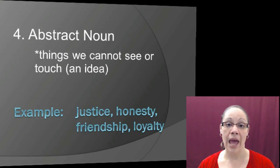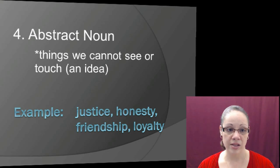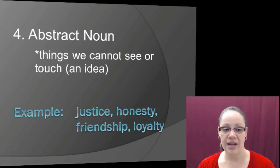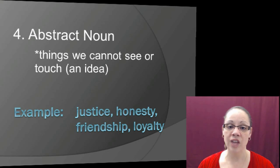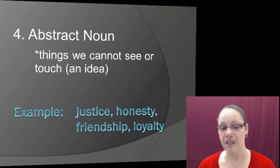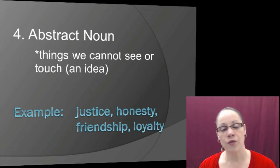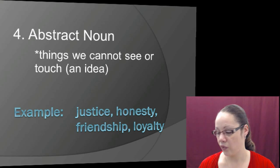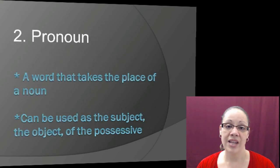The last type is the abstract noun, the opposite of a concrete noun. Abstract nouns are things we cannot see or touch — they are ideas. Examples include justice, honesty, friendship, and loyalty. We can't physically touch loyalty or honesty; they are concepts, making them abstract nouns. Note: we can touch a friend, but not friendship itself.